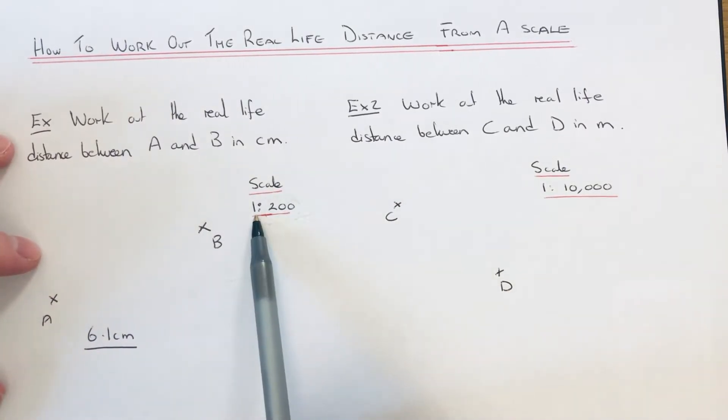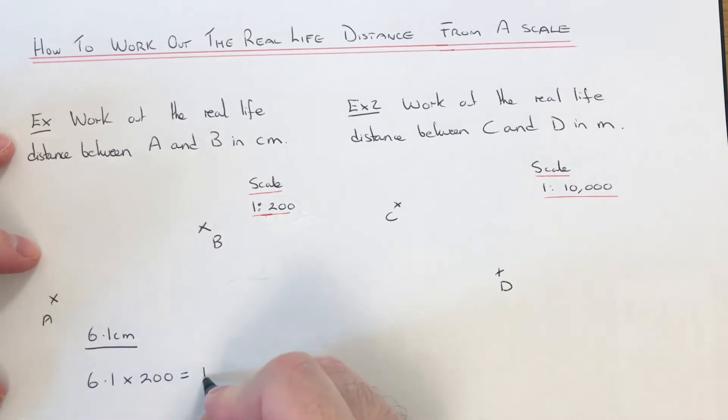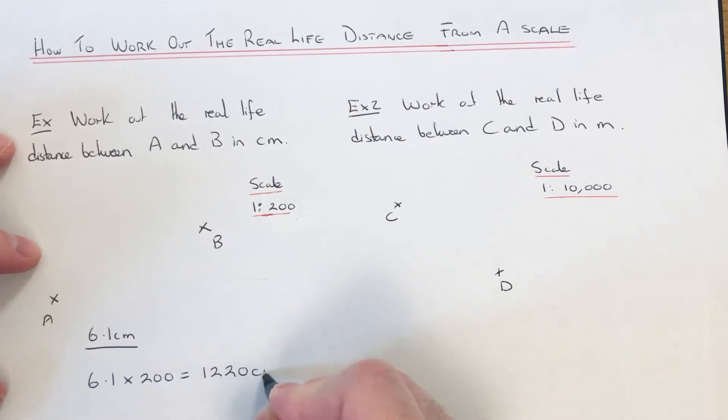Since we've measured it in centimeters, that means one centimeter on our map is 200 centimeters in real life. So we just need to multiply this 6.1 by 200, and that will give an answer of 1220 centimeters.